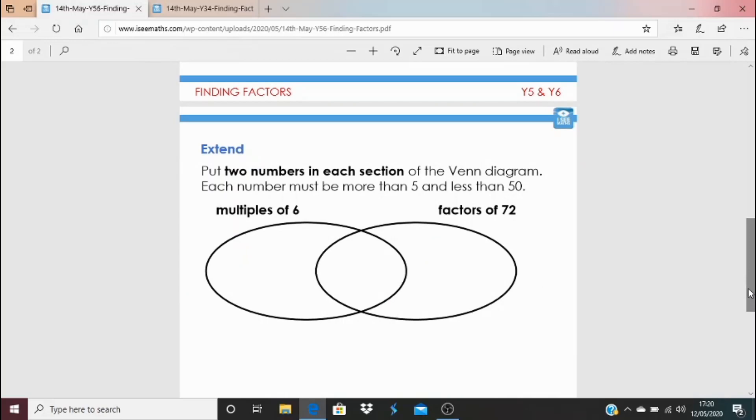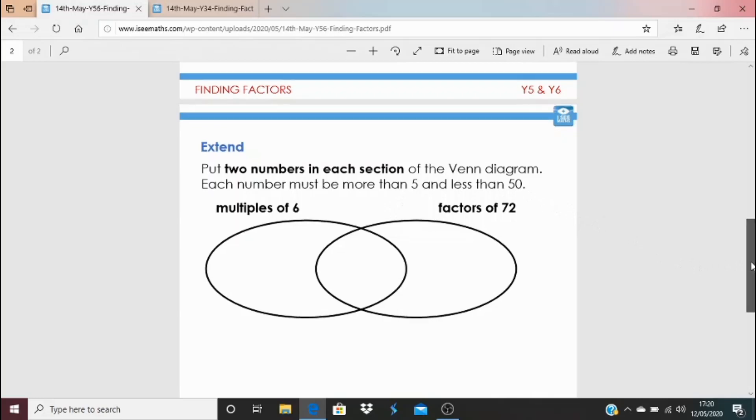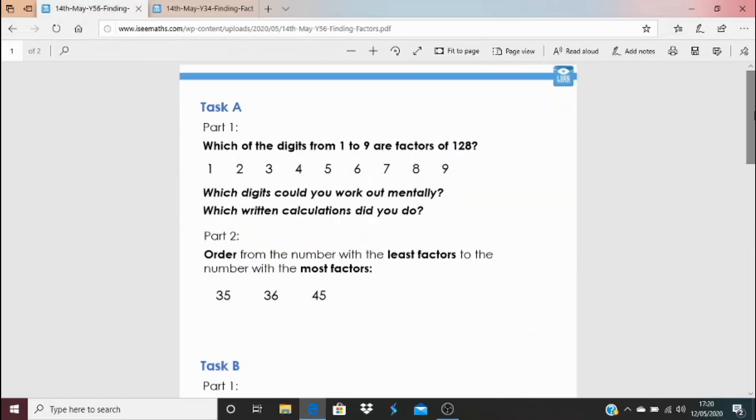We're back to those Venn diagrams. So we're after two numbers in each section of the Venn diagram and we want those numbers to be more than five and less than 50. So really looking forward to seeing how we get on with that. And of course, I'll see you again tomorrow.